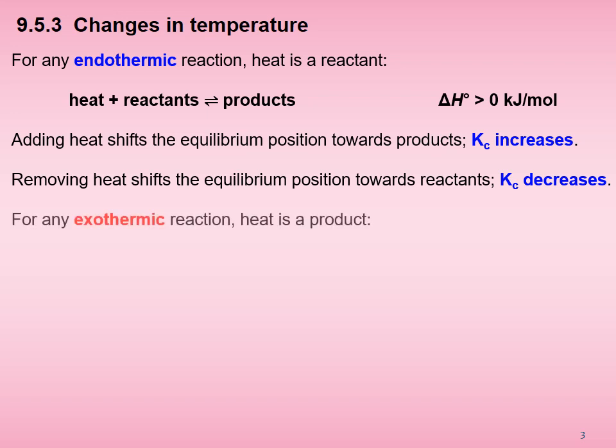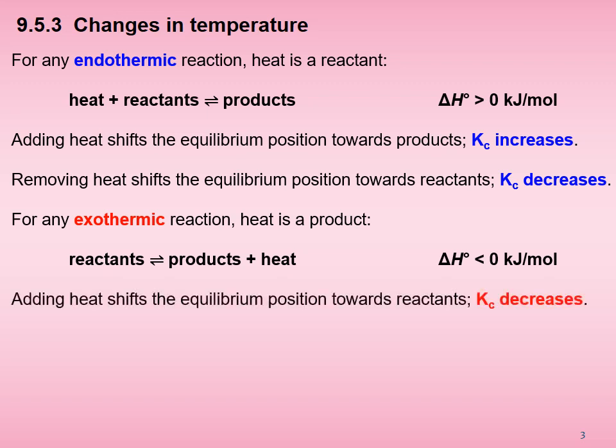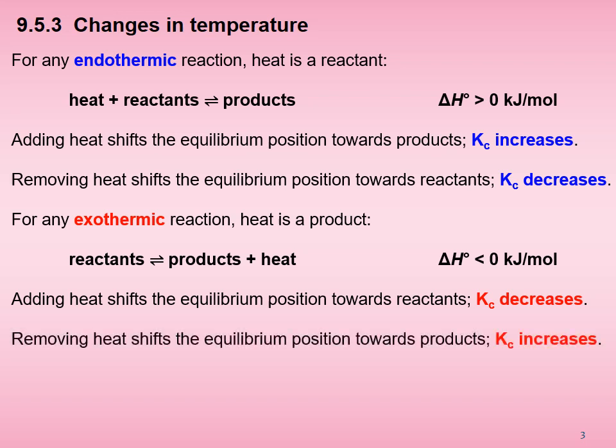For any exothermic reaction, heat is a product, written in the format: reactants → products + heat. The enthalpy change in standard state is less than 0 kJ per mole — that is, negative. Adding heat shifts the equilibrium position towards reactants and Kc decreases. Removing heat shifts the equilibrium position towards products and Kc increases.